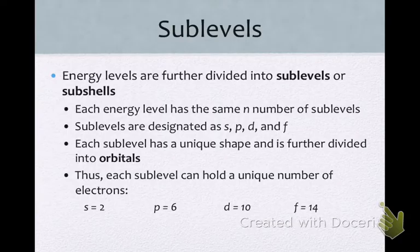Each energy level has the same N number of sublevels. What I mean by that is if I have energy level 1, it's going to have one sublevel. If I have energy level 2, it will have two sublevels. Energy level 3 will have three sublevels, and so on. Now the sublevels are designated with letters. So we use the letters S, P, D, and F to designate the sublevels.